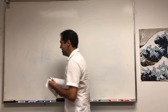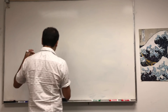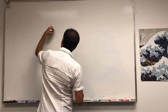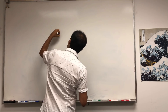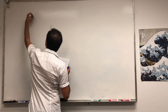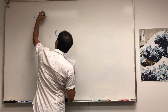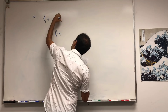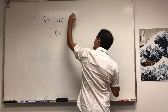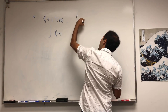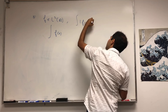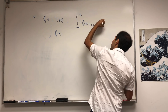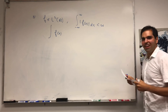Let me first state this. The theorem says if you take a function f of x — if you have a function f in L1 of R — L1 just means the integral of the absolute value of f(x) dx over the real numbers is finite, so the function has finite integral.